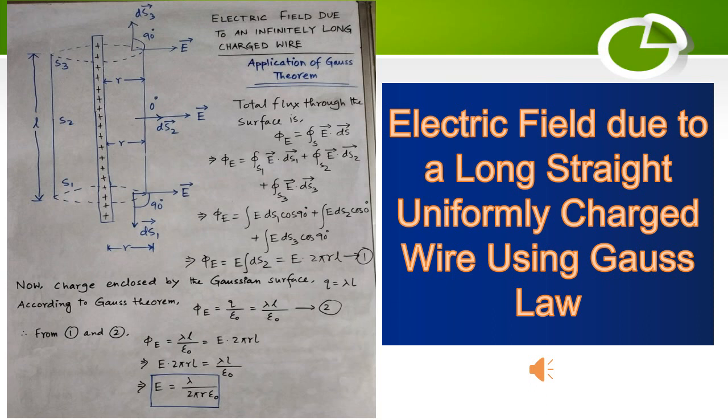Now the linear charge density lambda equals charge by length, q/l equals lambda, so we can write q equals lambda times l.